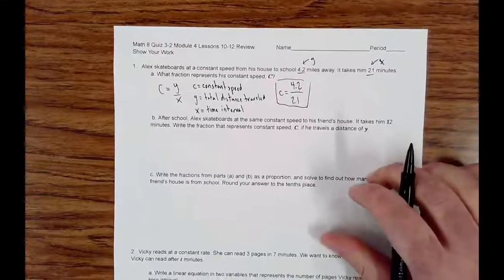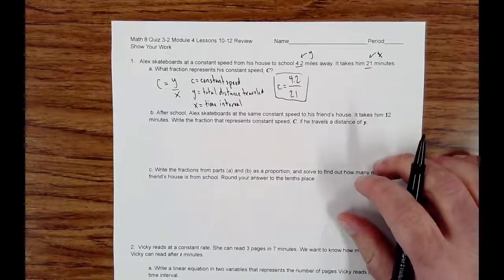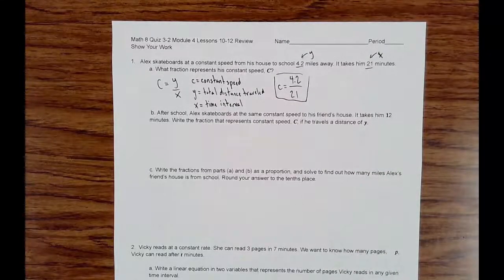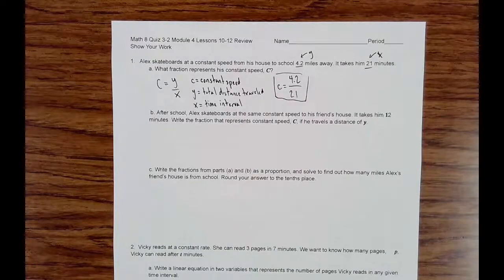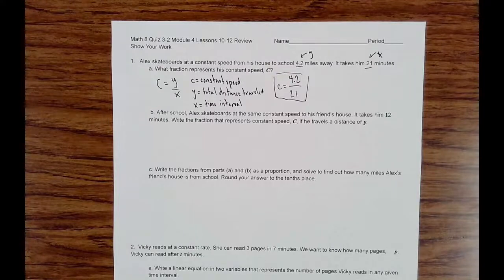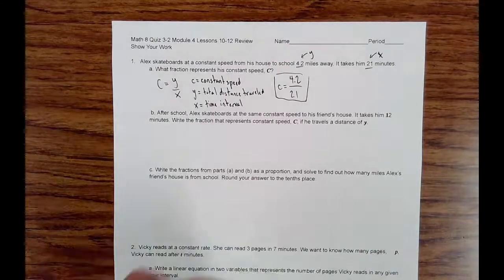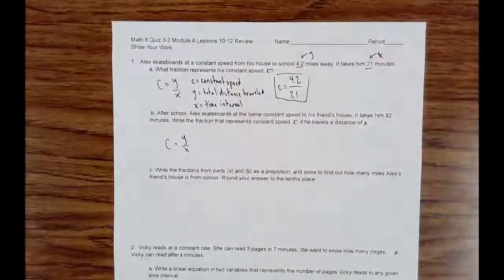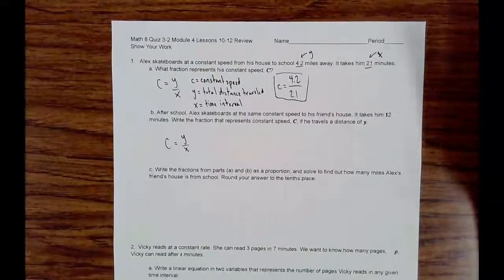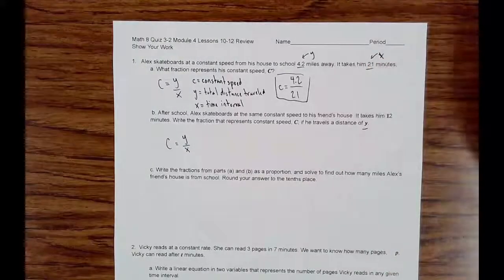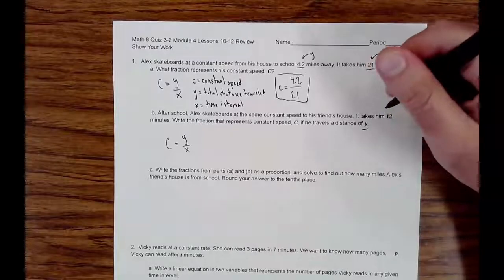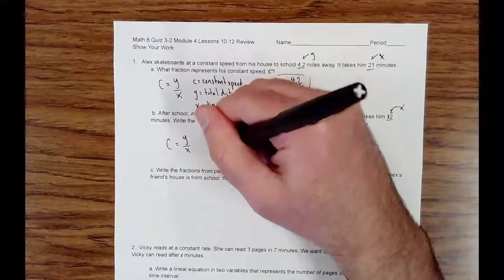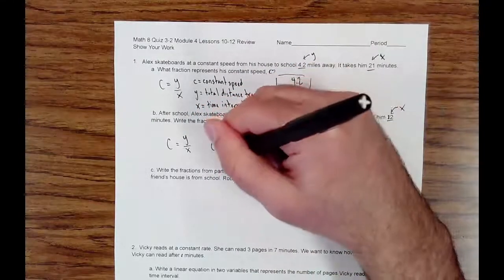All right, for B, after school, Alex skateboards at the same constant speed to his friend's house. It takes him 12 minutes. So we're going to write the fraction that represents constant speed C if he travels a distance Y. Well, same idea here. We're going to take that C constant speed equal to Y over X, and we're just going to plug in what we know. In this case, we don't know Y, because it's a distance of Y, but we have the X. It's 12 minutes. So it's going to be C is equal to Y over 12.